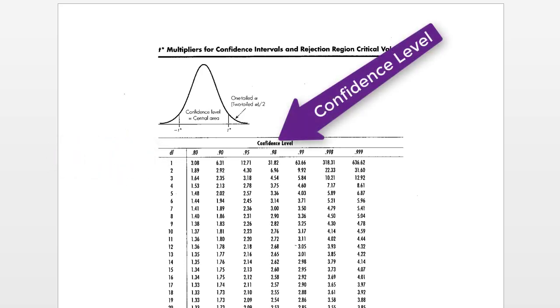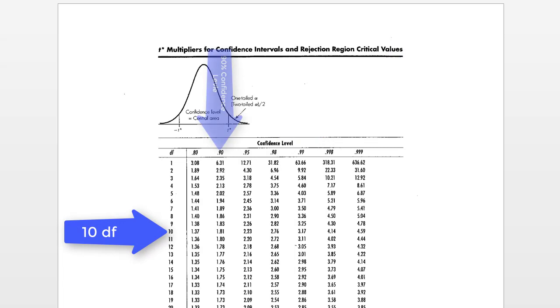So if you are looking for the multiplier for 10 degrees of freedom with a 90% confidence level, you would just find the intersection between the two. Remember that degrees of freedom is n minus 1, so the sample size minus 1. The one thing about this table is that it will require you to actually calculate degrees of freedom before you use it.